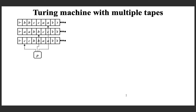The first variant that we are going to see is a Turing machine with multiple tapes. For example, consider a Turing machine which has three different tapes. There is a single control unit; at any time the control unit will be in one of the finitely many states, but there are three tapes. In the case of a standard Turing machine, only one tape — here there are three tapes and each tape has a read-write head.